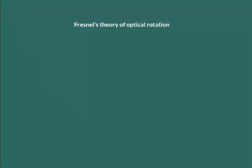Fresnel concluded that optical rotation inside a medium can simply be explained as follows: a plane polarized light, when it enters into an optically active medium, is split up into two oppositely directed circularly polarized lights. So we can say a linear vibration is equivalent to RCP plus LCP. This is the basic idea of Fresnel's theory of optical rotation.